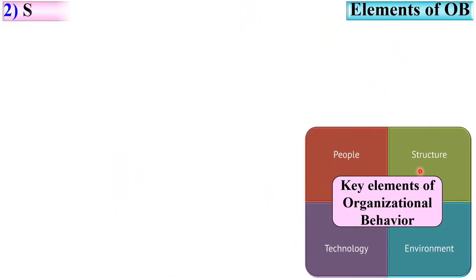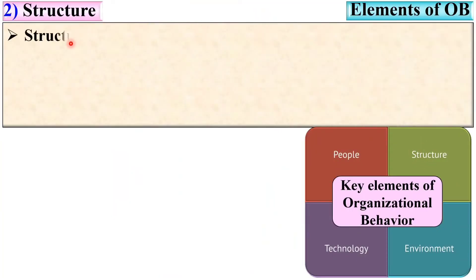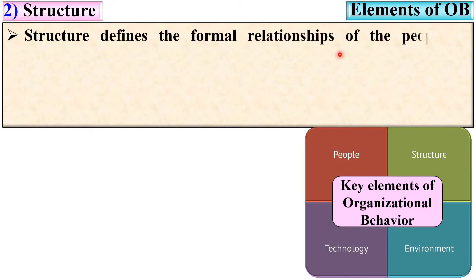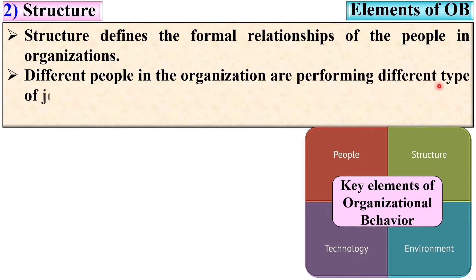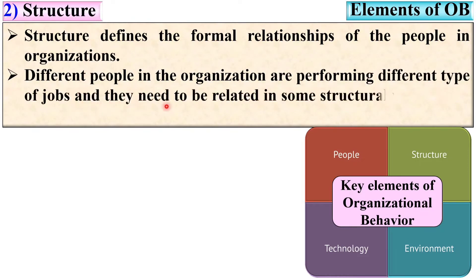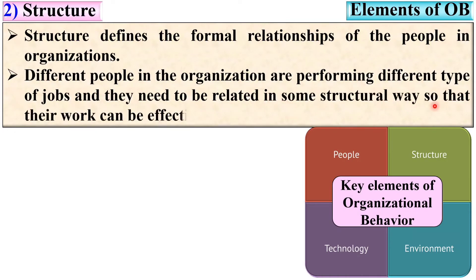The second key element is structure. Structure defines the formal relationship of the people in the organization. Different people perform different types of jobs or roles, and they need to be related in some structural way so that their work can be effectively coordinated.